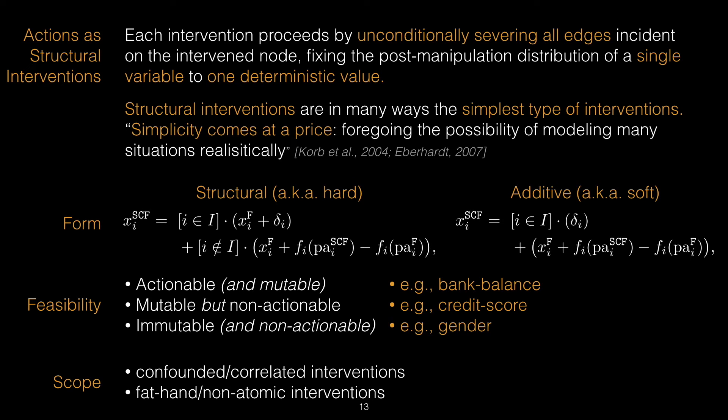Furthermore, we provide examples of hard versus soft interventions, otherwise known as structural versus additive interventions, as well as how to handle fat-hand interventions, which are actions that may simultaneously require intervening on multiple variables. An example here is that finding a new job may simultaneously intervene on income and length of employment.